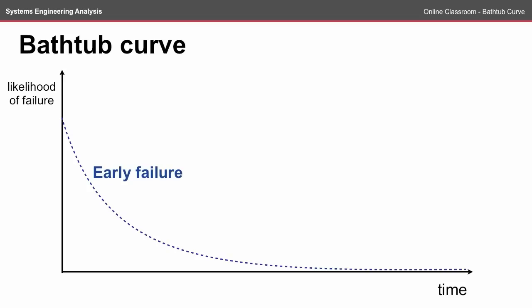The first is early failure, where the failure rate is quite high in the early stages of the life cycle of the product. A typical example of this might be a manufacturing defect, which means that a large number of problems occur early on.